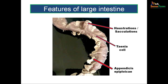The large intestine features corresponding to the cecum include tenia coli — three longitudinal bands called tenia libera, tenia mesocolica, and tenia omentalis. In the cecum, the tenia are slightly thinner than in the rest of the large intestine. The pouchings of the large intestine wall, called haustrations and sacculations, are not found in the cecum. Appendices epiploicae, pouches of visceral peritoneum filled with fat, are very rarely found in the cecum wall.